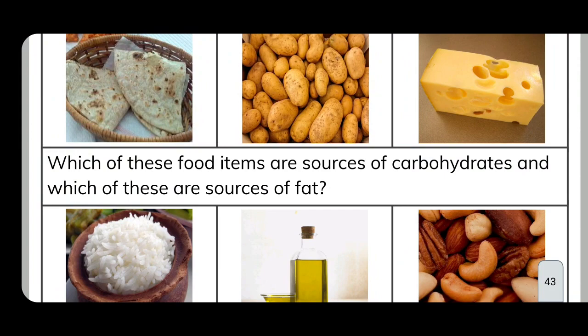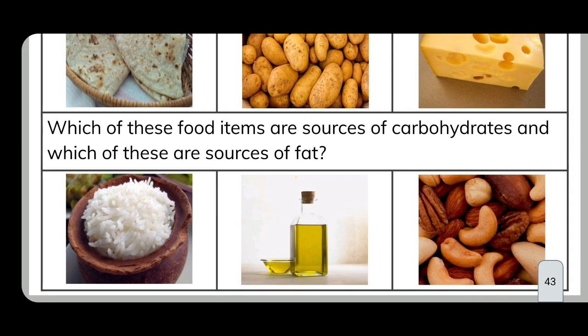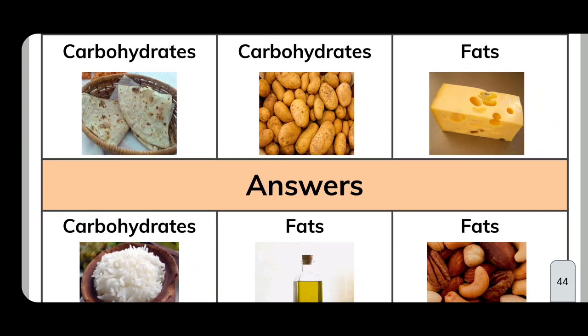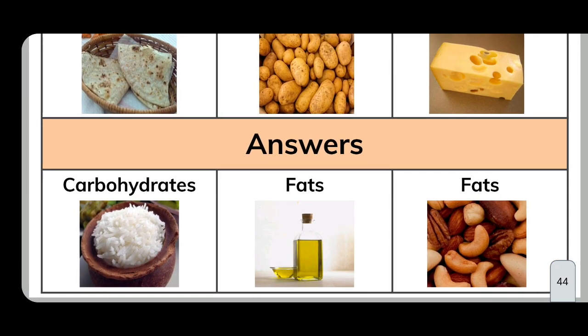Quick check: which of these food items are sources of carbohydrates and which are sources of fats? Chapati — carbohydrates; potato — carbohydrates; butter — fats; cheese — fats; rice — carbohydrates; oil — fats; nuts — fats.